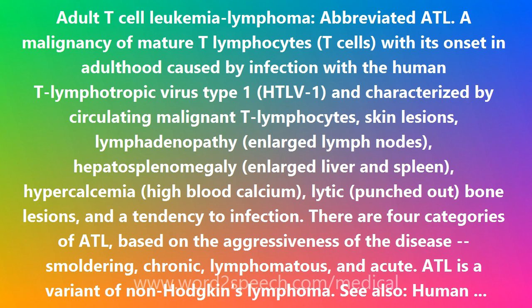There are four categories of ATL based on the aggressiveness of the disease: smoldering, chronic, lymphoma, and acute. ATL is a variant of non-Hodgkin's lymphoma. See also: human T-lymphotropic virus.